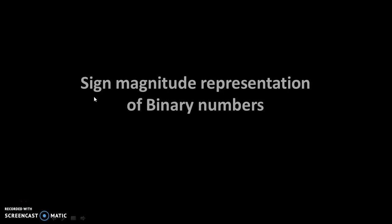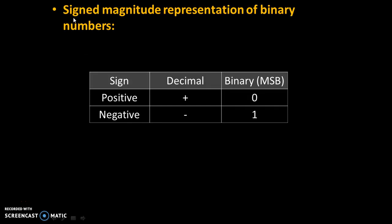Hello friends. Today we will see sign magnitude representation of binary numbers. Sign magnitude means numbers are denoted by sign. In the decimal number system, signs are denoted by plus or minus — positive numbers by plus sign, like plus 5 or plus 25, and negative numbers by minus sign, like minus 22 or minus 25. In binary, to indicate plus we use 0 at MSB, and to indicate minus we use 1 at MSB.